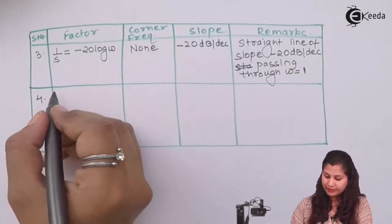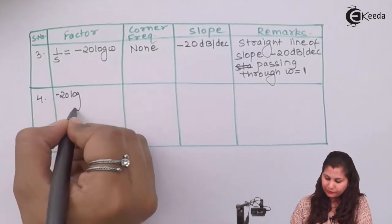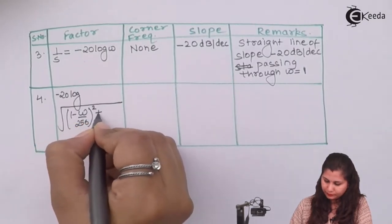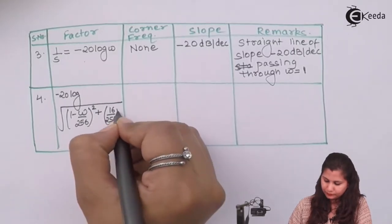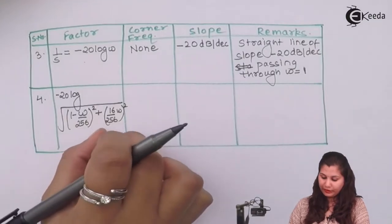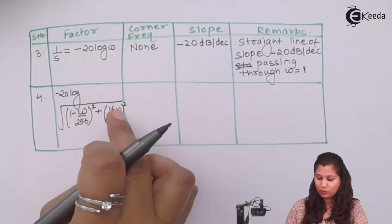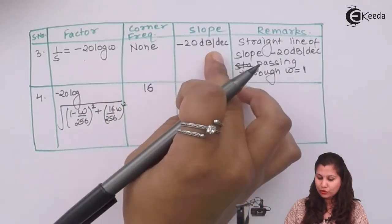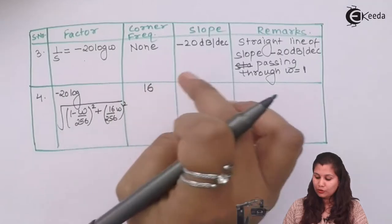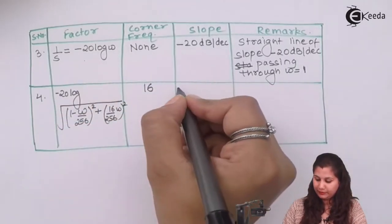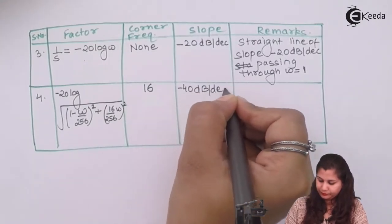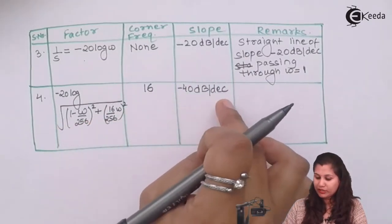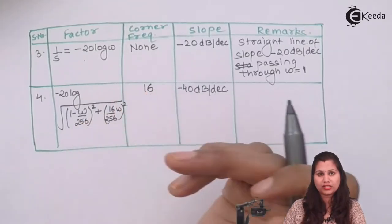The fourth and last factor is the quadratic denominator term. Its corner frequency is ω = 16 rad/s, calculated from the coefficient 16/256. Because it is a quadratic factor present in the denominator, the slope is −40 dB/decade. It is a straight line starting at corner frequency ω = 16 with slope −40 dB/decade.